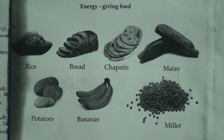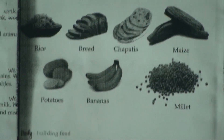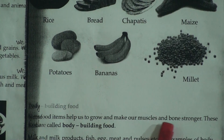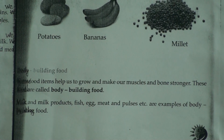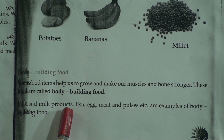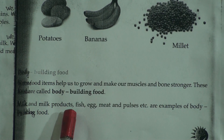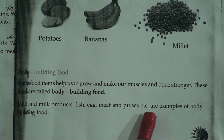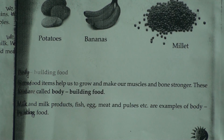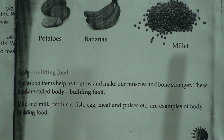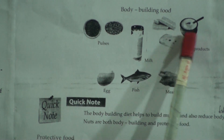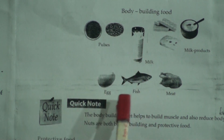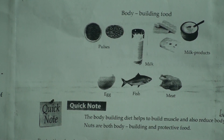Body building food — some food items help us to grow and make our muscles and bones stronger. These foods are called body building food. These food items are milk and milk products like cheese, butter, ghee, etc., fish, egg, meat, and pulses. That means we get protein from this food and this protein helps us to build our body. Here is a picture of body building food like pulses, milk, milk products, curd, ghee, butter, egg, fish, and meat.